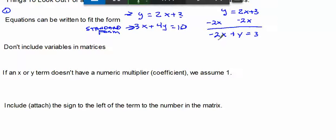One other thing you need to consider is that if an x or y term doesn't have a numeric multiplier, we assume 1. You notice here in this equation, y does not have a numeric multiplier. So we know this is negative 2x plus 1y; we assume 1, equals 3.